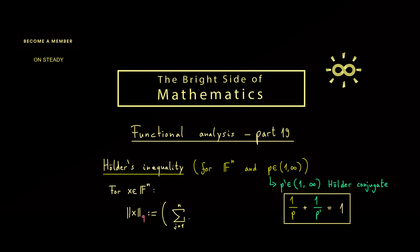It's defined by the sum over the entries in the absolute value to the power Q, and then we take the Qth root of the whole thing. And this is what we do for all Q between 1 and infinity, including 1.